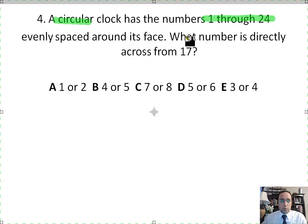So unlike a regular clock which has numbers 1 through 12, this clock has numbers 1 through 24. They are evenly spaced around its face. What number is directly across from the number 17?